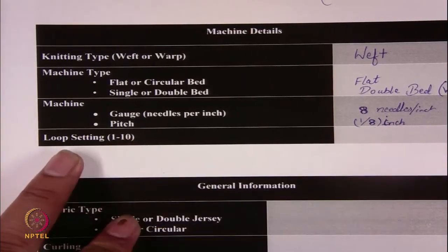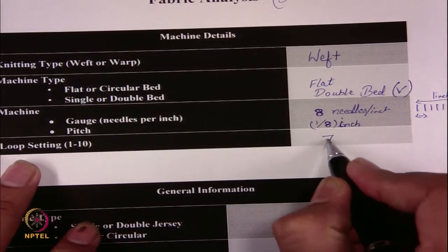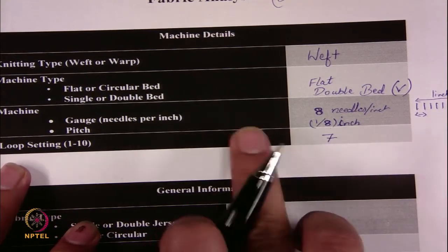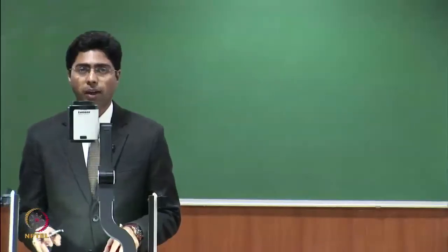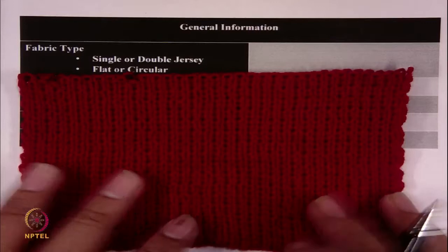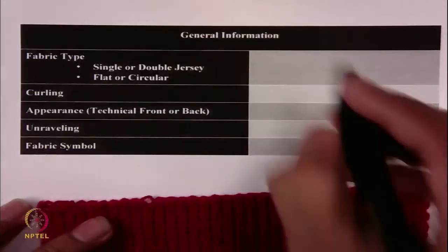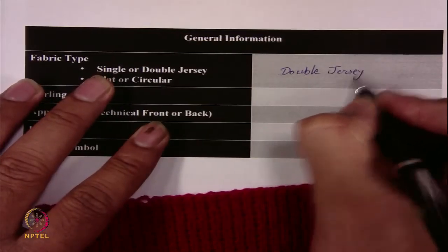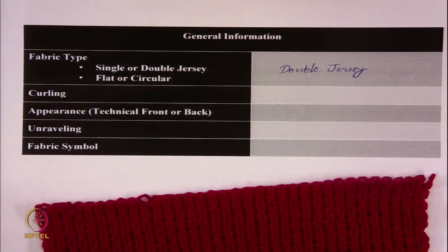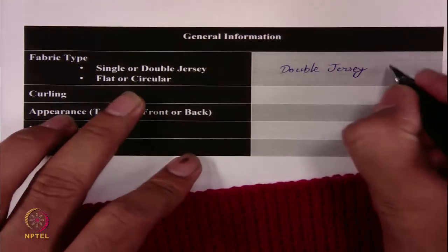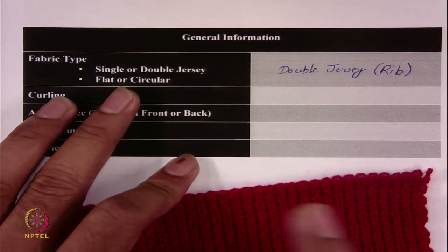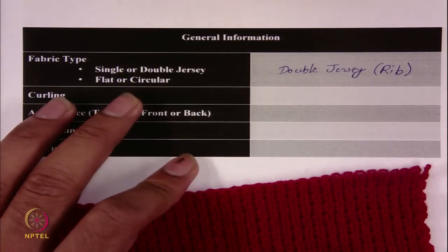The loop setting — just now I showed you — the loop setting was around 7. If more loop setting, more loop length; lower loop setting, lower loop length. Now the general information about the fabric: this fabric was actually double jersey category. In double jersey also there are different types of construction — rib, purl, and interlock — which in the next week I am going to introduce. At this moment, this particular fabric is having rib construction. So within the double jersey, it is the rib construction which we are analyzing.